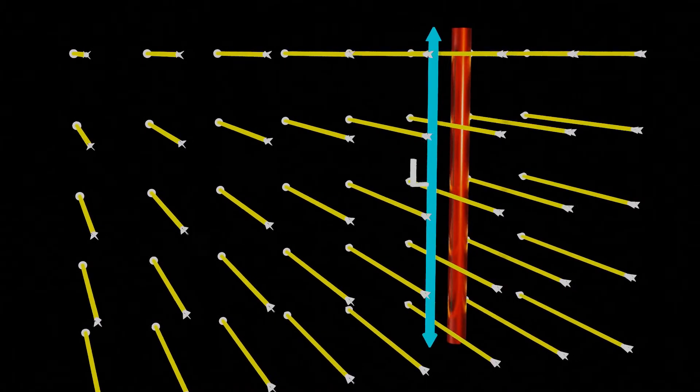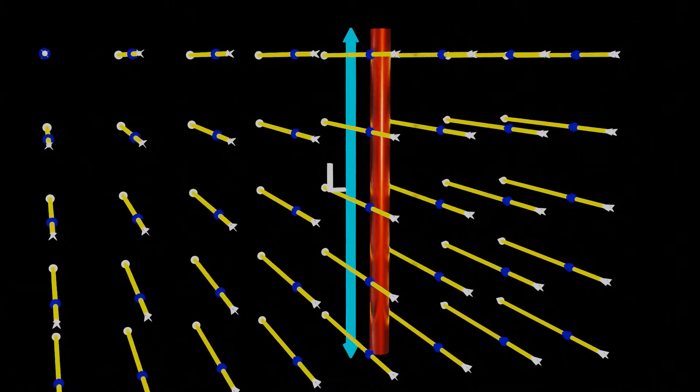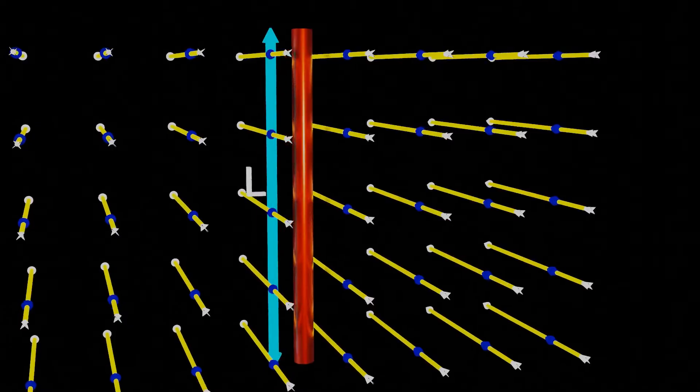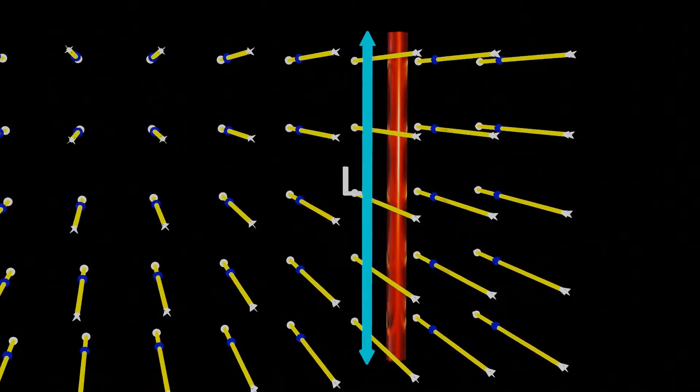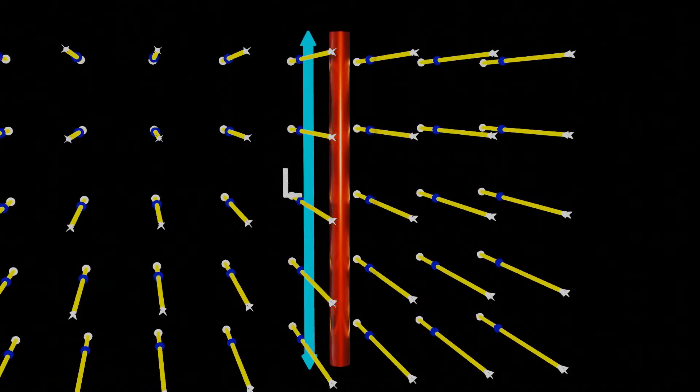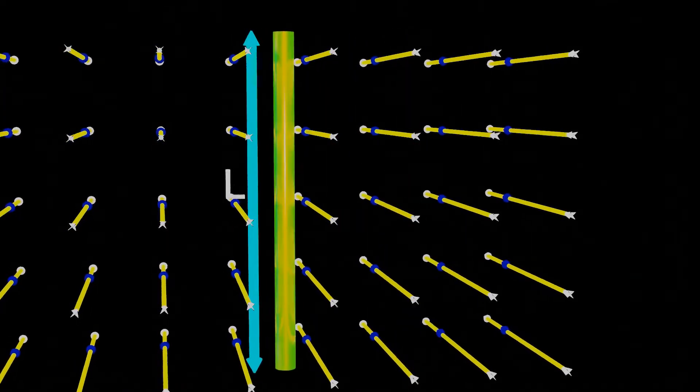First, let's take a conductor of length L moving across the magnetic field lines directed from north to south. Due to this motion of a conductor, magnetic flux passes through the conductor changes, which induces electromotive force or EMF in a conductor.